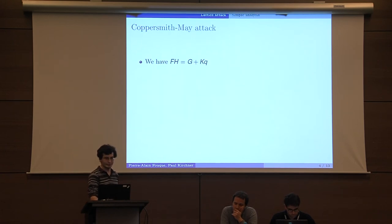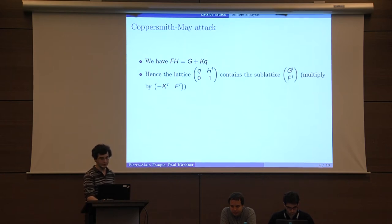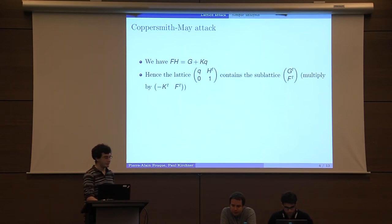Now I will present the Coppersmith-Shamir attack. We have F times H, and due to our definition, this is equal to G plus an integer matrix K times Q. So we can consider this lattice.